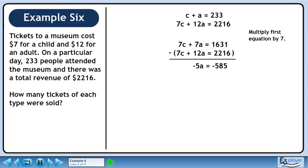When we subtract the two equations, we get minus 5A equals minus 585. Dividing both sides by minus 5 gives A equals 117.